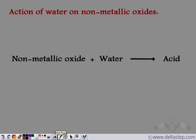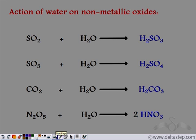Whenever a non-metallic oxide reacts with water, we always get the corresponding acid. For example: sulfur dioxide reacts with water to form sulphurous acid; sulfur trioxide reacts with water to form sulphuric acid; carbon dioxide reacts with water to form carbonic acid; and nitrogen pentoxide (N₂O₅) reacts with water to form nitric acid. So all non-metallic oxides react with water to form the corresponding acids.